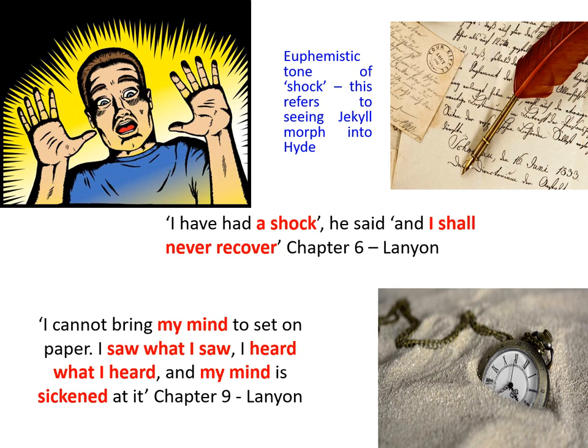'My mind' — repeated — suggests how damning that image is. It's sickening to see the secret exposed. He doesn't even know the damage that Jekyll has been hiding by suppressing his addiction to the potion that makes him Hyde. But it's so scary for Lanyon that he dies on the spot.